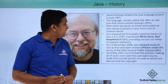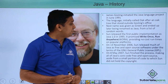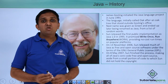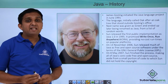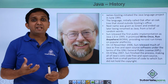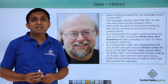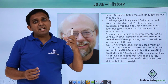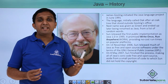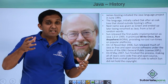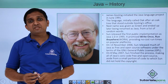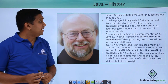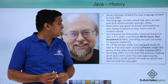Sun released the first public implementation of Java, which is Java 1.0, in 1995. Java is also called a write-once-run-anywhere language because it has platform independency. This means if you compile Java source code on one operating system, you can run that byte code on another operating system, indicating the feature of platform independency.